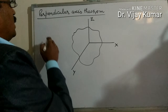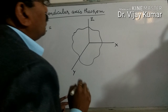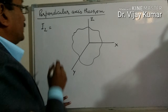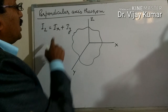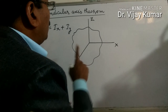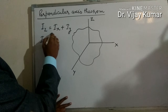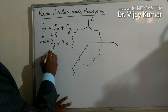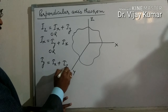The moment of inertia of a body about the z-axis is equal to the sum of the moment of inertia of two mutually perpendicular axes: I_z equals I_x plus I_y, where I_x and I_y represent the moment of inertia about the x-axis and y-axis. Similarly, we can write I_x equal to I_y plus I_z, or I_y equal to I_x plus I_z.